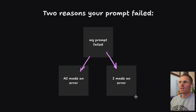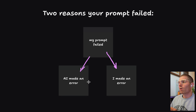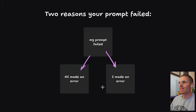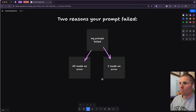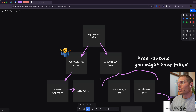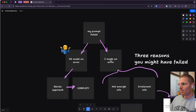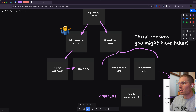There are really only two reasons a prompt could fail: either AI made an error, or you made an error. It might be a little unsettling to hear, but there's a bit more to it, so let's break it down logically. There are two reasons the prompt might fail, but there are actually three reasons you might have failed.